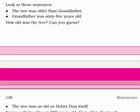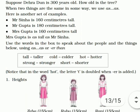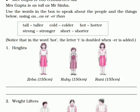Now the next is speaking. When two things are the same in some way, we use 'as...as.' Ki jab do chizayn kisi kaaran ek jaisi hoti hai — jaise yahaan pe aapko bataya hai ki ped aur Dehradun dono kya hai, barabar purane hain, bade hain. Toh woh dono ek jaisi hai. Toh us waqt hum lagaate hain 'as [adjective] as.' Abhi aapko yahaan pe diya hai: use the words in the box to speak about the people and things below, using 'as...as' or 'than.'